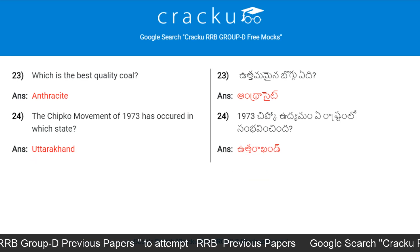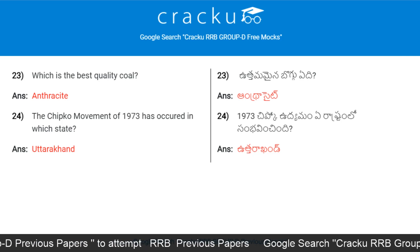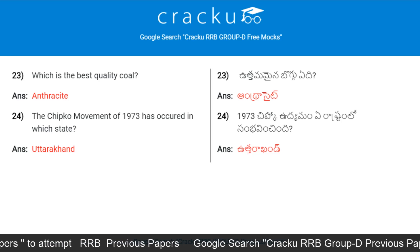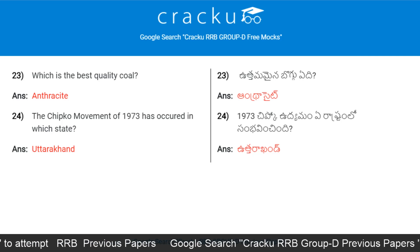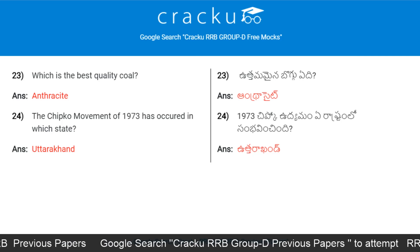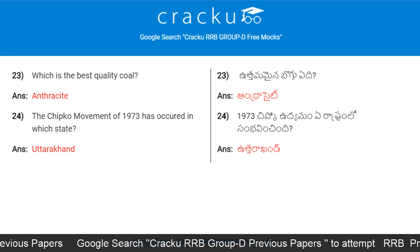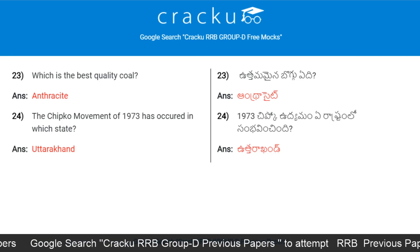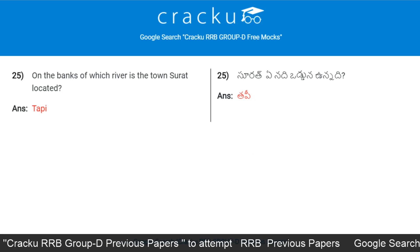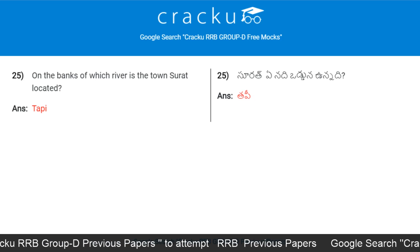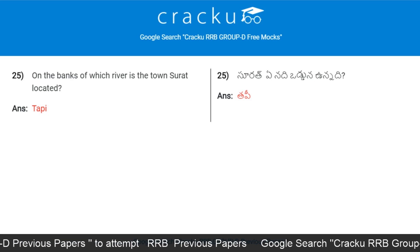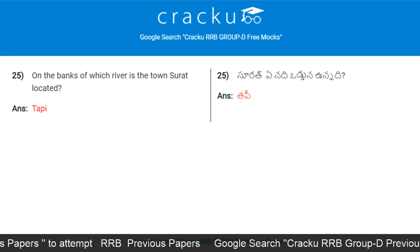Which is the best quality coal called? Anthracite. The Chipko movement of 1973 occurred in which state? Uttarakhand. On the banks of which river is the town Surat located? Tapi River.